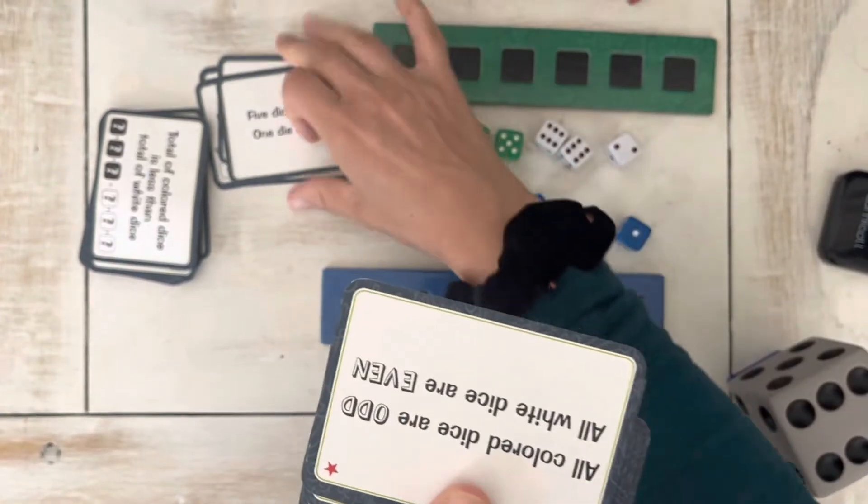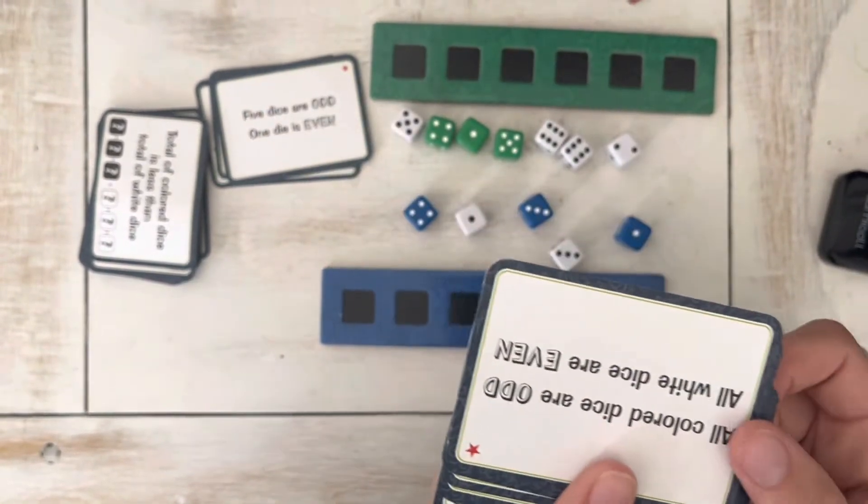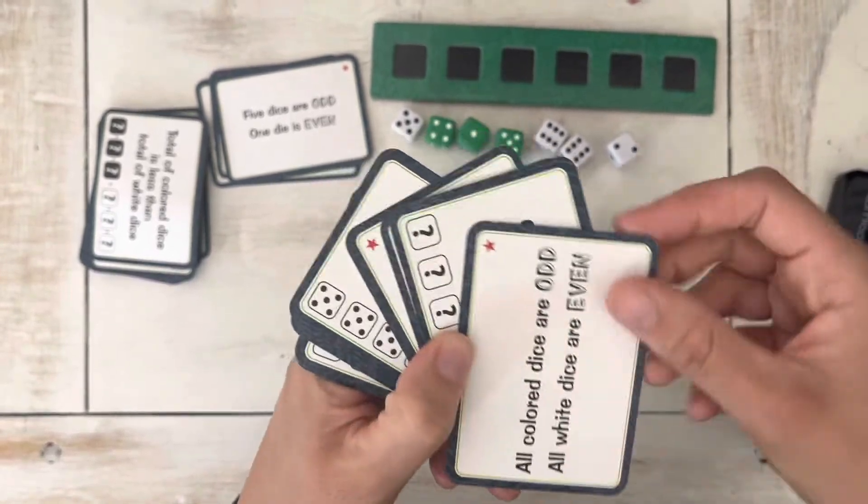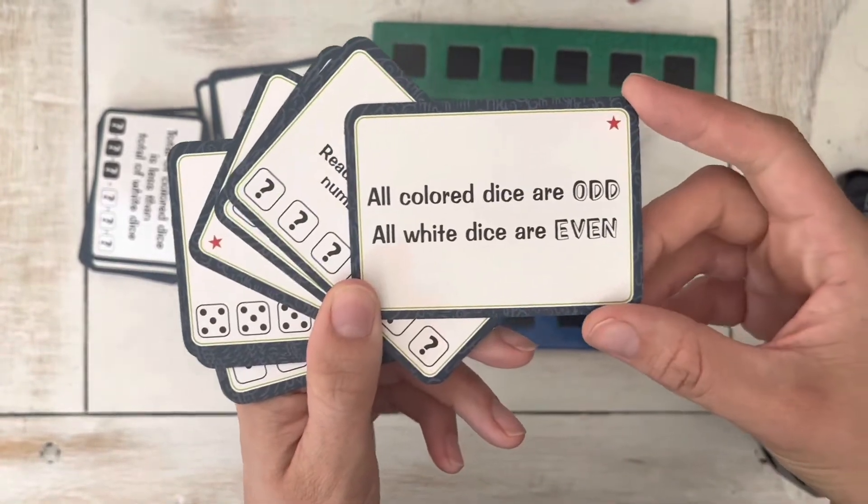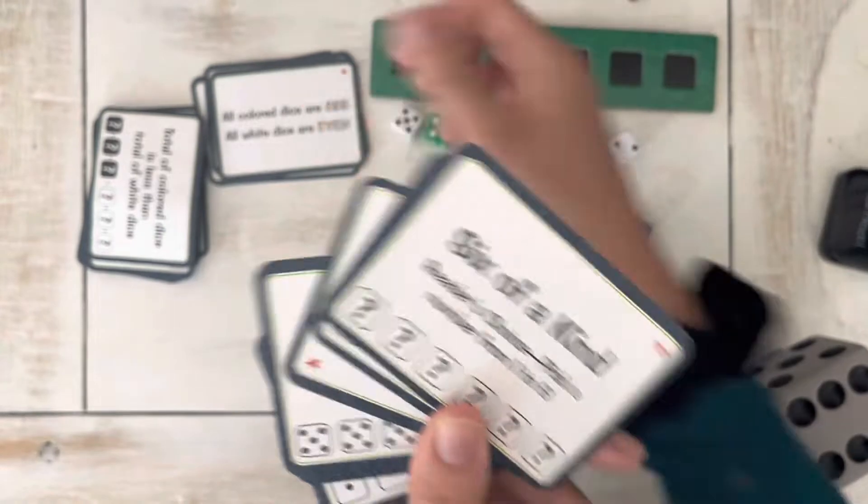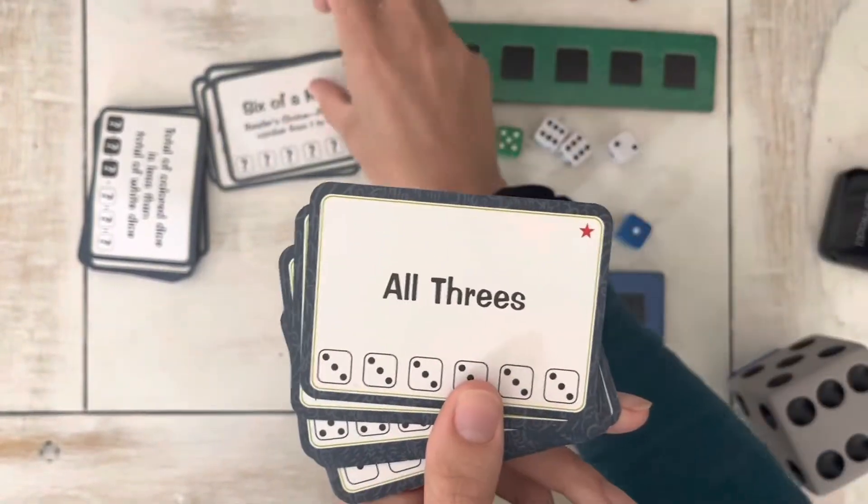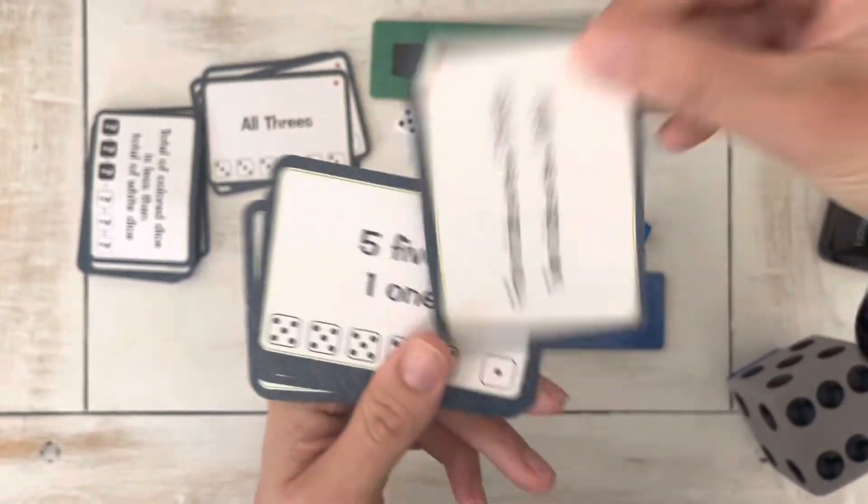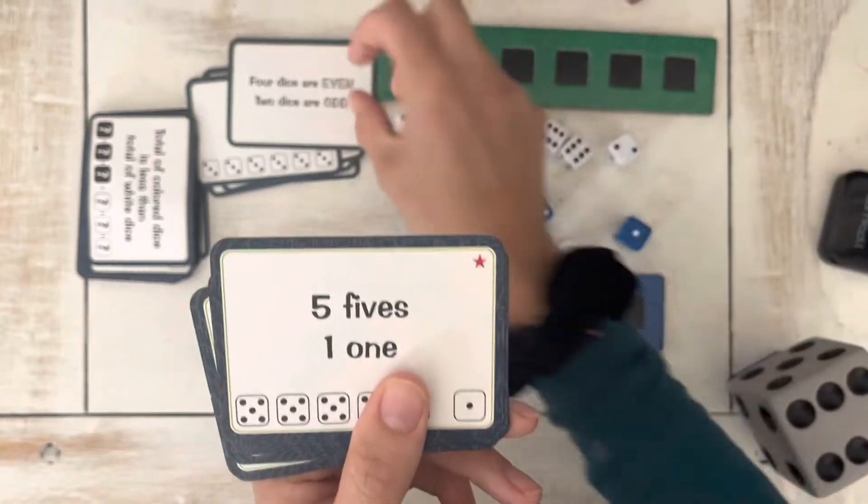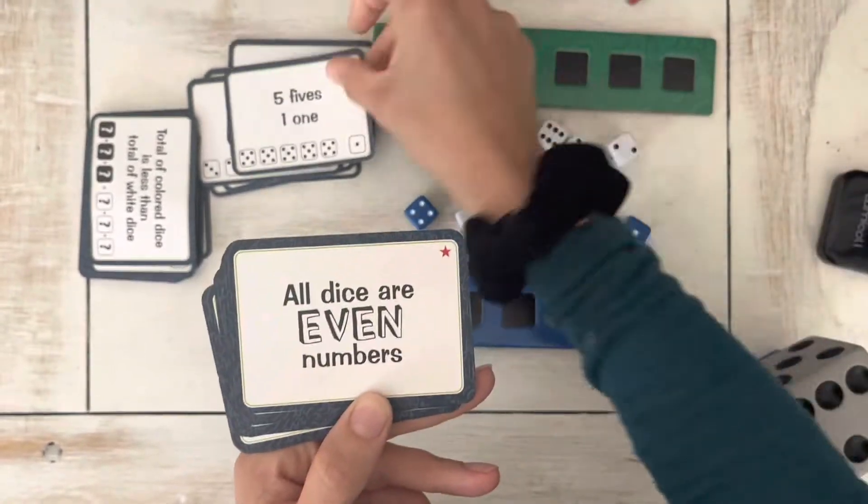Maybe a little bit too hard for my kindergartner, but definitely good practice for like a first grader. All colored odd, all white even. Six of a kind. All threes. So you kind of get an idea of the easier cards.